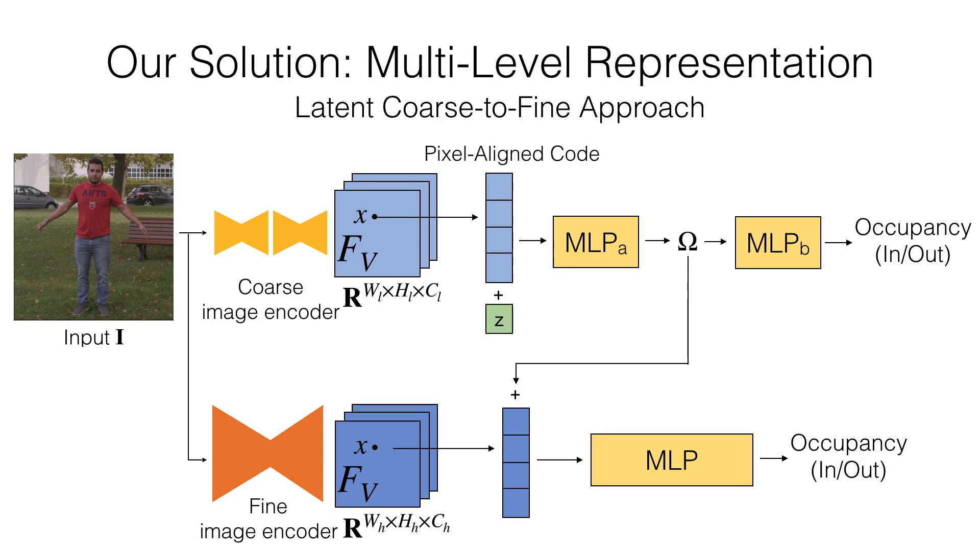the fine module can easily perform at least as good as the coarse module as the omega provides all 3D information used to make the coarse prediction. Additionally, the fine image encoder can fully focus on geometric details that the coarse module is unable to provide.